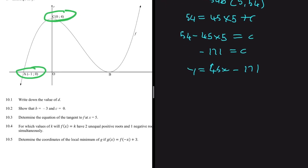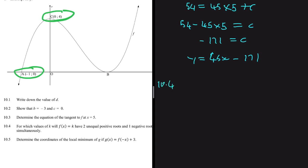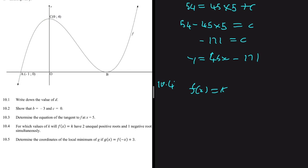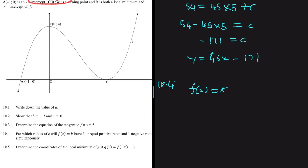Now question 10.4: for which values of k will f(x) = k have two unequal positive roots and one negative root simultaneously? Currently the graph has one negative root and one positive root. We need to shift the graph such that we get two positive roots and one negative root.